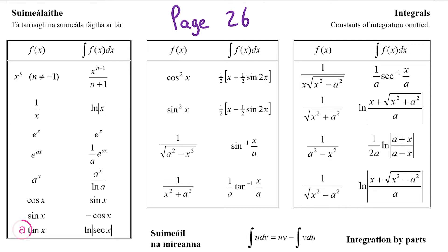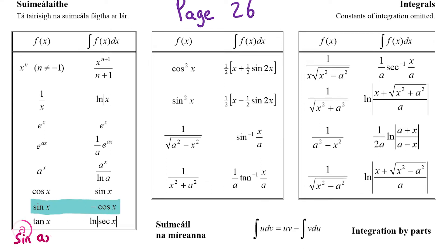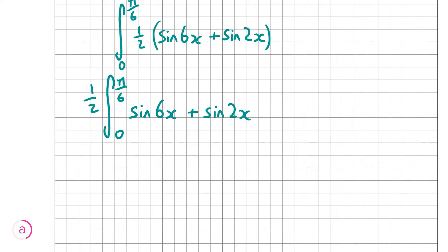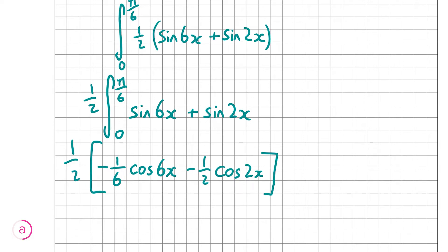It's the second last entry in the table on the left hand side. The integral of sine x is minus cos x. However, if you have sine ax, where a is a constant before the x, that goes to minus 1 over a times cos ax. So integrating sine 6x gives minus 1 over 6 cos 6x, and sine 2x gives minus 1 over 2 cos 2x. We evaluate that from 0 to pi over 6.